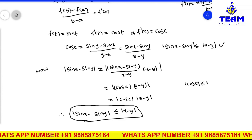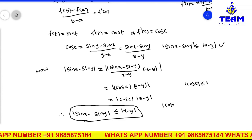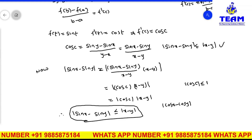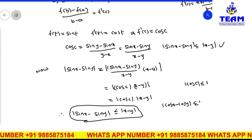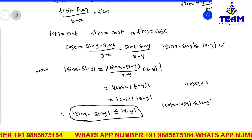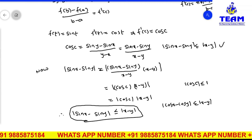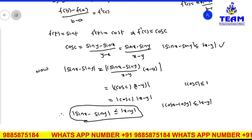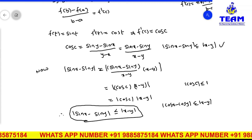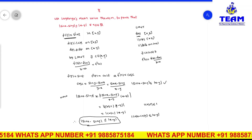Is it clear friends? Similarly, you can prove mod of cos x minus cos y is less than or equal to mod of x minus y using the same method — just consider f of t as cos t in place of sin t.